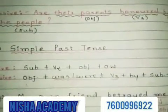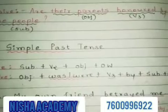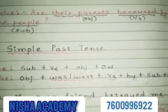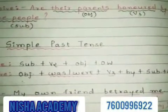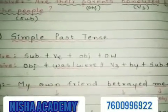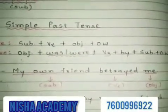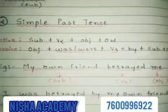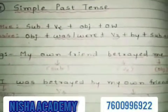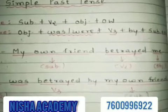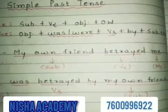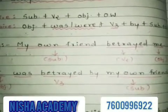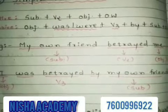The second tense is simple past tense. Active voice formula: Subject + V2 + Object + Other words. Passive formula: Object + was/were + V3 + by + Subject + Other words. For example: 'My own friend betrayed me.' Here 'my own friend' is the subject, 'betrayed' is the second form of the verb, and 'me' is the object. In passive, the object 'me' comes forward: 'I was betrayed by my own friend,' and 'my own friend' becomes the object.